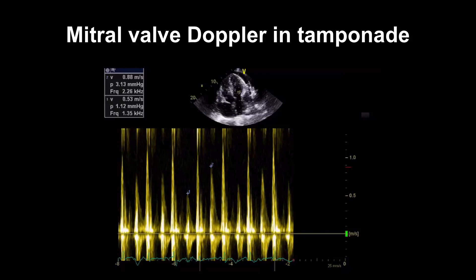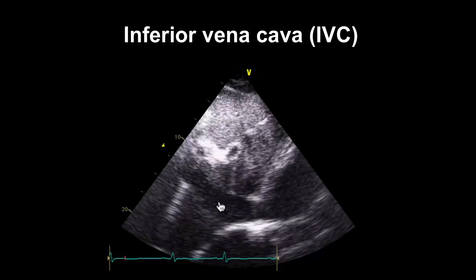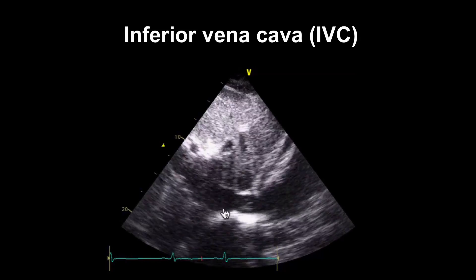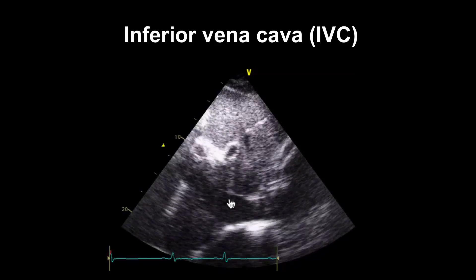We can look at mitral Dopplers using pulsed wave Doppler at the tips of the mitral valve in the four-chamber view, recording the peak E-wave velocity in inspiration and expiration with a reduced sweep speed. A reduction in velocity on inspiration of more than 25–30% suggests tamponade; in this example it's 27%, which is worrying. The same can be done for the tricuspid valve, where velocity increases on inspiration with a cutoff of 40%. The IVC is also very useful: a dilated IVC that isn't collapsing well with a sniff is another worrying sign.